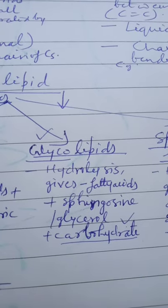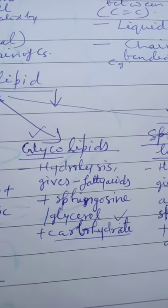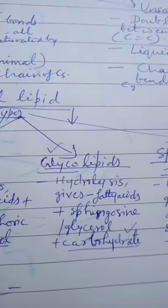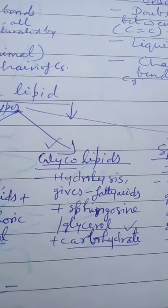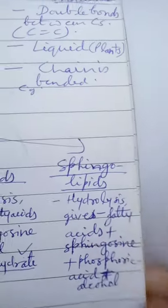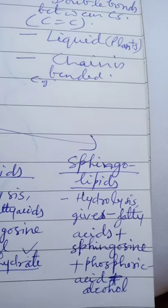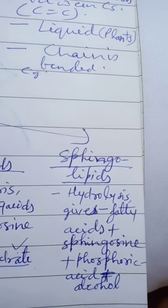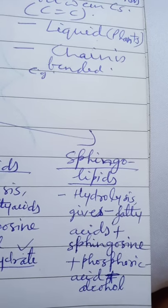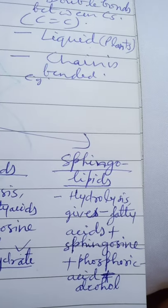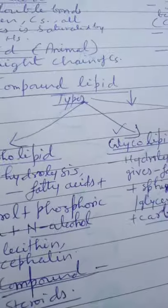Glycolipids on hydrolysis give fatty acids plus sphingosine or glycerol plus carbohydrate — the word 'glyco' refers to carbohydrate. Sphingolipids on hydrolysis give fatty acids plus sphingosine plus phosphoric acid and alcohol. Up to this discussion we now have knowledge of lipids up to the category of compound lipids.